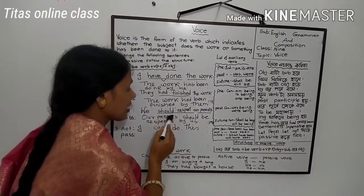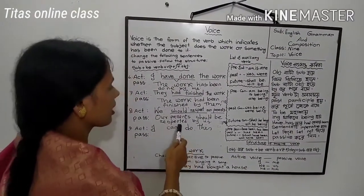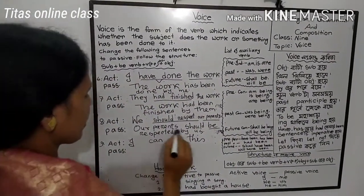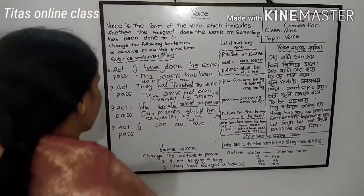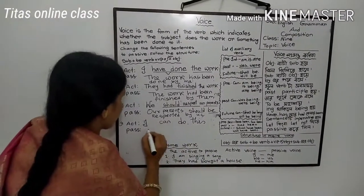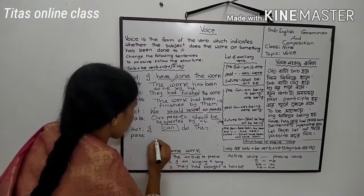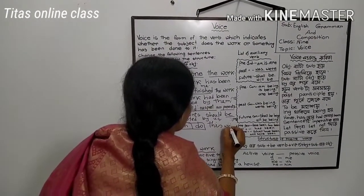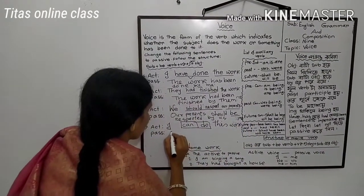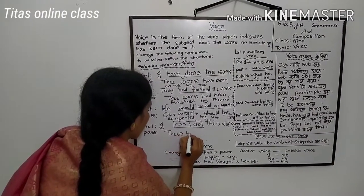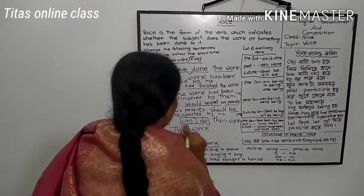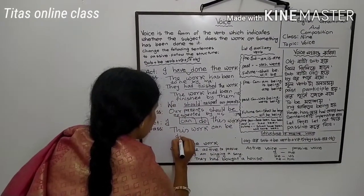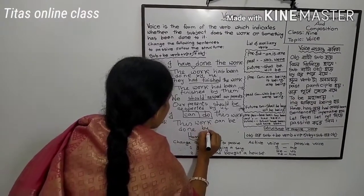If a modal auxiliary is presented in the active voice, the same modal auxiliary is presented in the passive voice plus 'be' plus verb in past participle form. For example: 'I can do this work.' The passive form is: 'This work can be done by me.'